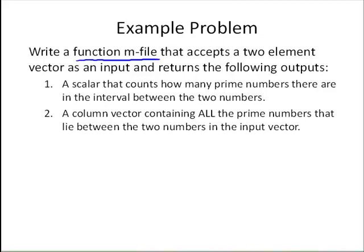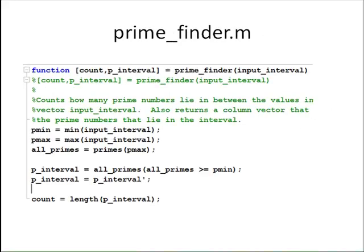So, let's look at this function. I call it prime_finder.m, and you can download it from the folder where this video lies, and I would encourage you to do so. Make sure you understand how it's working. So, we have our function command defining our two outputs. We have the scalar count, and what will be our vector of prime numbers that I call p_interval. And then our input is one variable, but this will be a vector with two numbers.